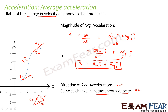Please understand: the direction of average acceleration is the same as the direction of change in instantaneous velocity. First, find the instantaneous velocity at the two points, then subtract the two vectors using the head-to-tail method and triangle law to find the change in velocity. Therefore the acceleration is also in that direction. So now we will go ahead and study instantaneous acceleration.